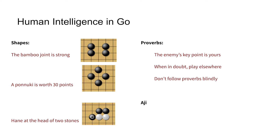We also have more meta-proverbs like 'the enemy's point is yours,' meaning if your opponent wants to go somewhere, it's probably a good idea for you to think about that point yourself. Or meta-proverbs like 'don't trust proverbs blindly.' While we might want to take these ideas and code them into a computer program, you can imagine that it's very difficult to write a line of code that says don't follow proverbs blindly.